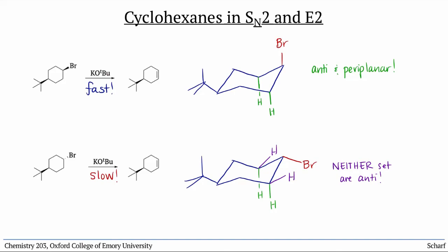Again, this is generalizable. In order for E2 elimination to occur from a cyclohexane, the leaving group must be axial and have hydrogens that are anti- and periplanar to it.